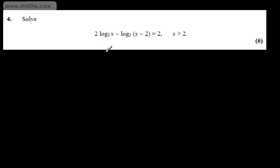Let's now just rewrite this. If we've got a power, we can bring the power up. So we can write this now as log to the base 3 of x squared minus log to the base 3 of x minus 2 is equal to 2.